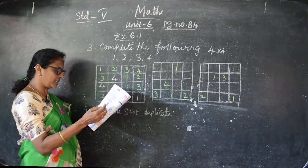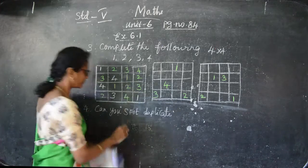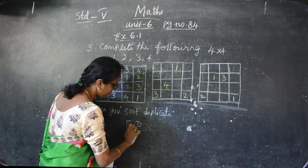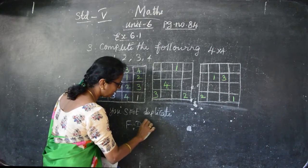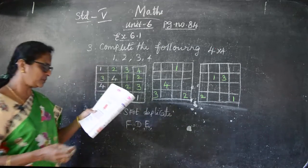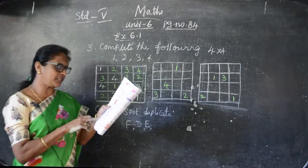So the repeated word is FDE. The repeated word is F, D and E. And the next one is: can you find the mistake explained here?